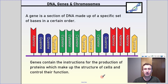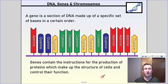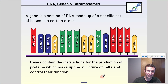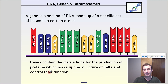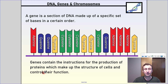If we take a look at a portion of the code of DNA — the nitrogen bases adenine, guanine, thymine, and cytosine — a specific section makes up something called a gene. A gene is a section of DNA made up of a specific set of bases in a certain order, and what that gene does is provide the instructions or the recipe for making a protein. Protein is a type of molecule — it's the thing that does things in cells, makes up the structure of cells, and controls their function.